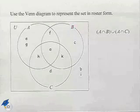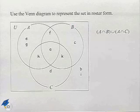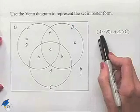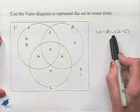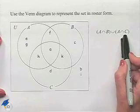Here's another problem dealing with Venn diagrams. Use the Venn diagram to represent the set in roster form. The set we're interested in is (A ∩ B) ∪ (A ∩ C).